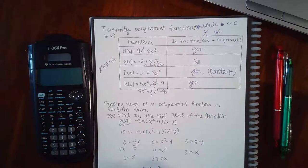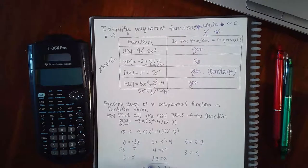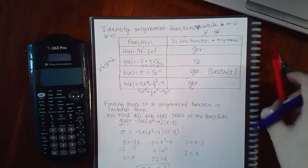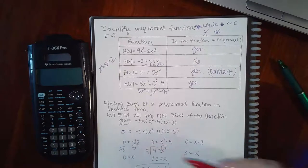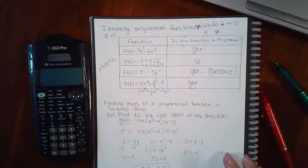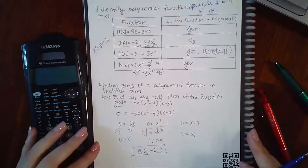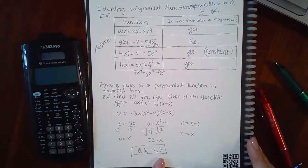So you actually have four zeros here. You have zero, positive 2, negative 2, and 3. Don't forget that when you take the square root of a number you automatically get plus or minus the square root of that number. So we had four solutions for this problem.